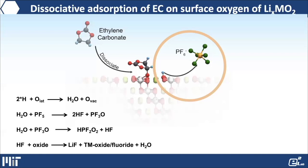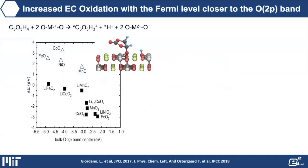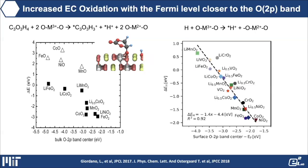We want to develop a unified descriptor to control the driving force of this process. By changing the Fermi level relative to the oxygen p-band of these oxides — shown on the horizontal axis — the driving force increases as we go to the right, which corresponds to increasing metal-oxygen covalency. This applies to late transition metal, nickel-rich NMC materials at a high state of charge, where the driving force for the oxide surfaces to strip hydrogen from carbonate molecules can be as high as 2 eV or 200 kJ/mol.